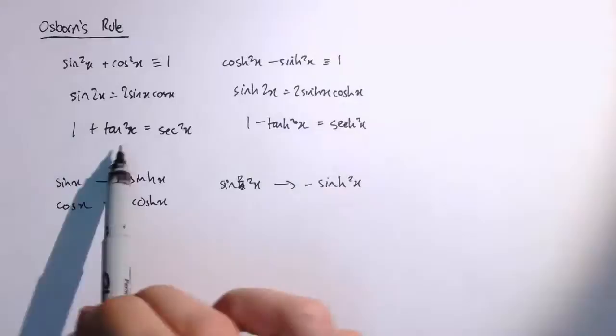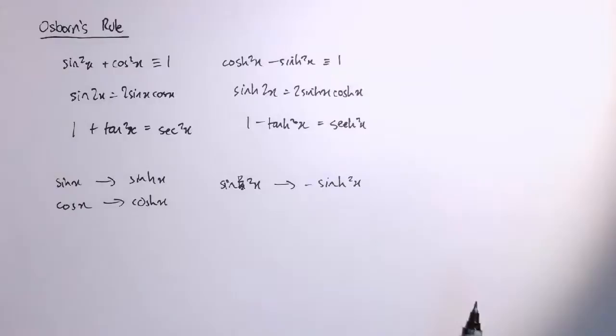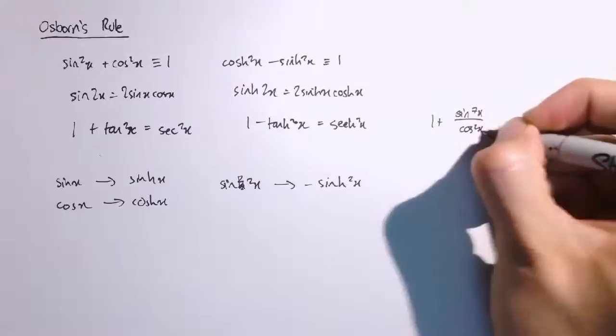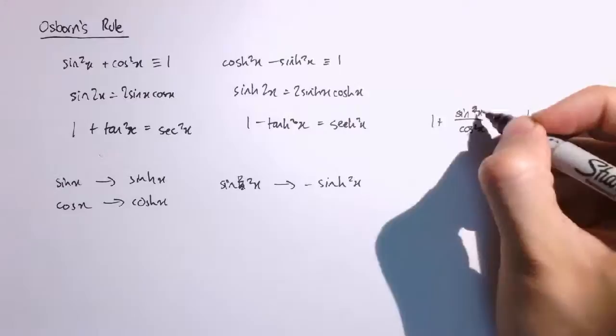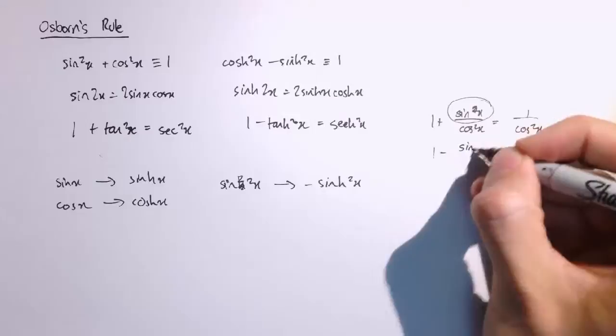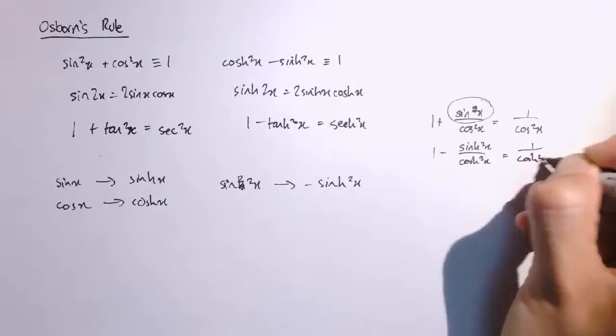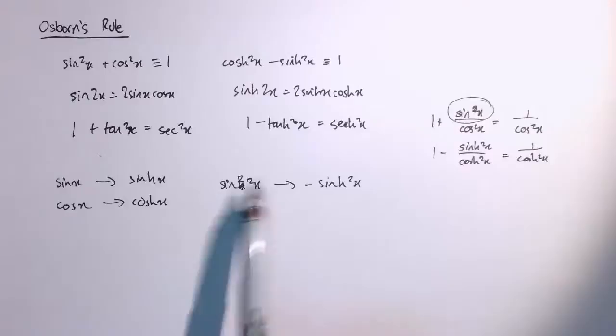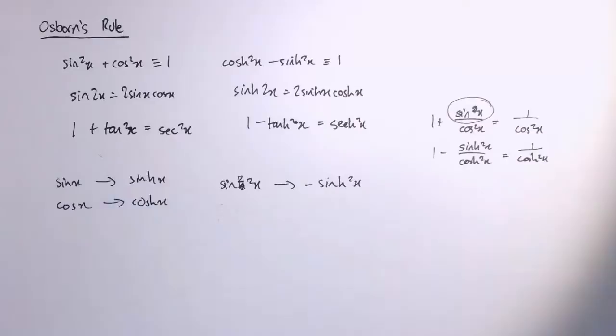Here 1 plus tan squared equals sech squared — there's not immediately a sine squared there, but there sort of is. If we rewrite everything in terms of sine and cosine: 1 plus tan squared is 1 plus sine squared x over cos squared x, which equals 1 over cos squared x. So actually it's the sine squared x that's inside the tan. When I change it, I get 1 minus sinh squared x over cosh squared x equals 1 over cosh squared x, giving us the identity 1 minus tanh squared x equals sech squared x. It's a good rule of thumb — swap sine and cos with sinh and cosh, and if you get a sinh squared factor make it minus sinh squared. Be careful about these implied ones.